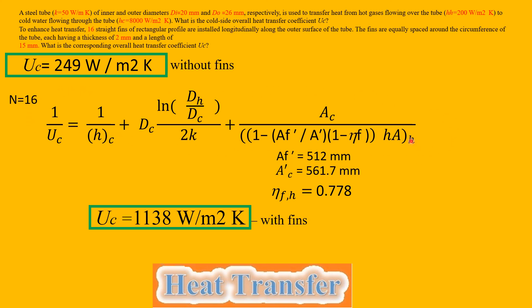If we take a look at our overall heat transfer coefficient formula, all good to go. Plug in all the values that we have, calculate. Uc will be 1138 watts per meter squared Kelvin. As a quick look, with fins and without fins, we can see there's quite a difference from 249 to 1138. These are the two answers for this problem. Thank you guys for watching, please like and subscribe and have a great day.